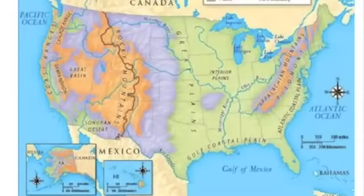Moving on from the Mississippi, we get to another section called the Great Plains — an area where we live. As you go from the interior plains across the Mississippi, the land starts going upward, and we call that the Great Plains. It has fewer trees, is great for growing crops, and is also great for cattle because there are no trees to get in the way — just wide open spaces.